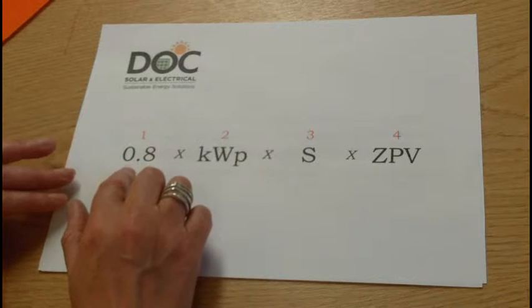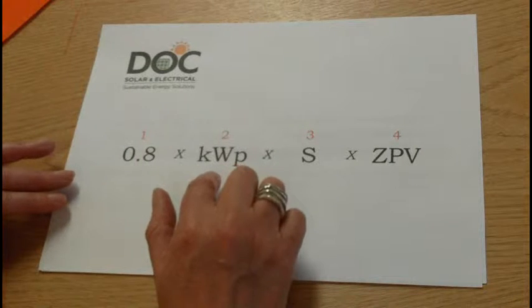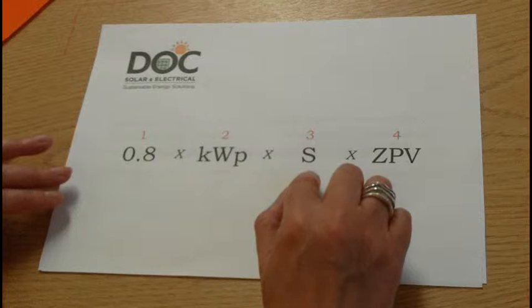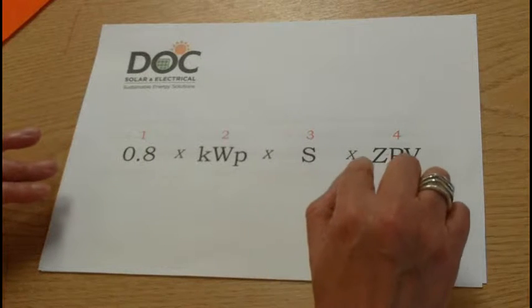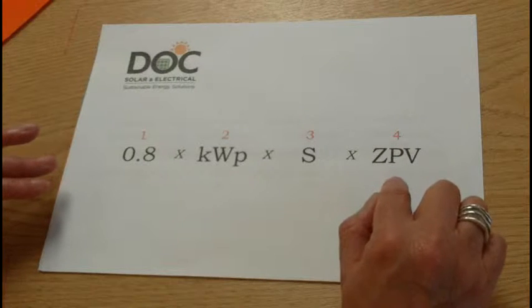Number 1 is the 0.8, times number 2, which is kWp, which stands for kilowatts peak, times number 3, which is S, which is your solar irradiation factor, times number 4, which is the ZPV, which is your overshading factor.